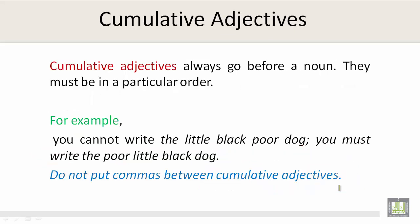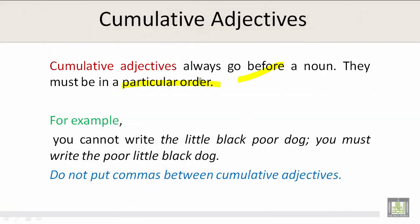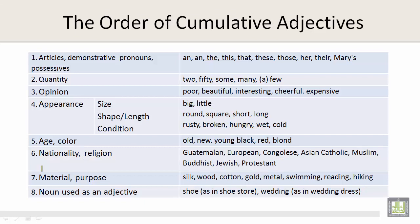Cumulative adjectives always go before a noun. They must be in a particular order. For example, you cannot write 'the little black poor dog.' You must write 'the poor little black dog.' Do not put commas between cumulative adjectives. Now, let's take a look at the order of cumulative adjectives.